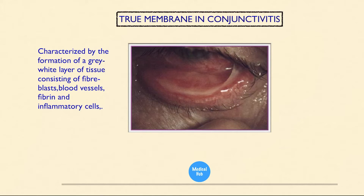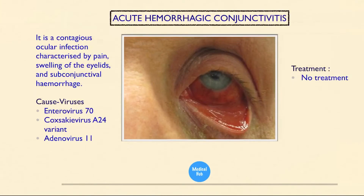This is true membrane conjunctivitis, characterized by the formation of a gray-white layer of tissue consisting of fibroblasts, blood vessels, fibrin, and inflammatory cells. Here you can see the formation of a true membrane.